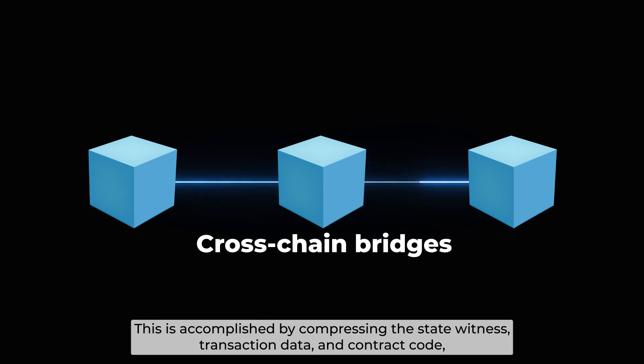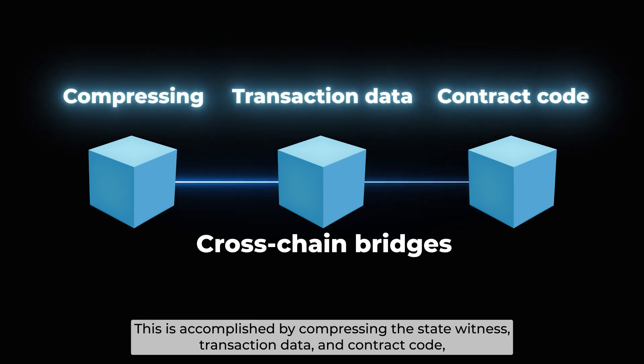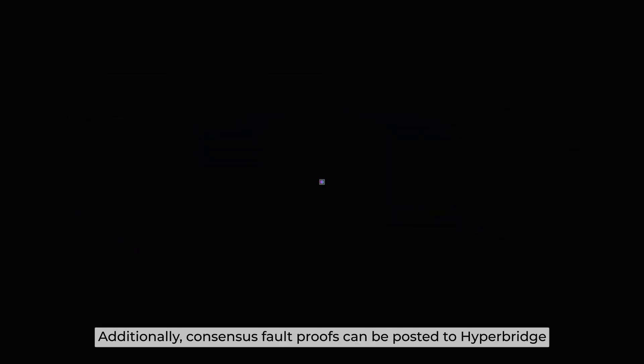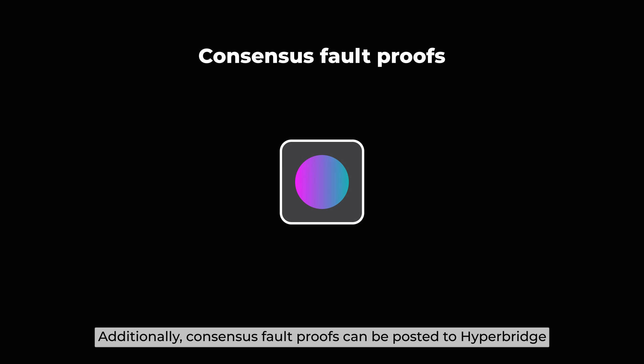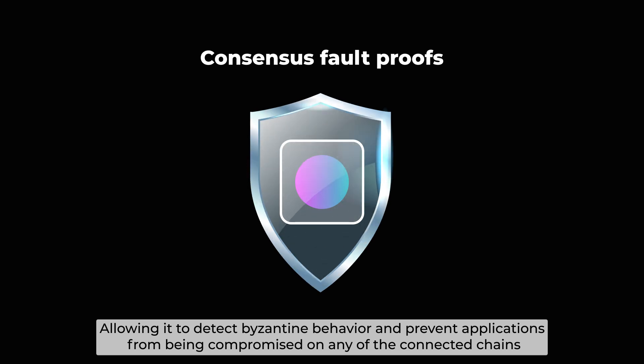This is accomplished by compressing the state witness, transaction data, and contract code, which can then be uncompressed and re-executed within a parachain core. Additionally, consensus proofs can be posted to Hyperbridge, allowing it to detect Byzantine behavior and prevent applications from being compromised on any of the connected chains.